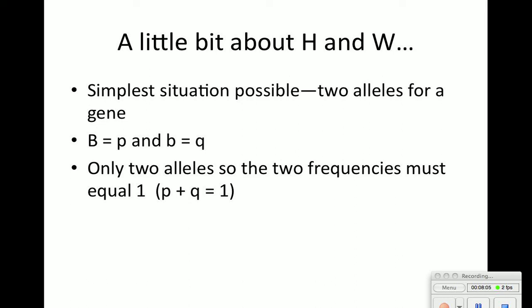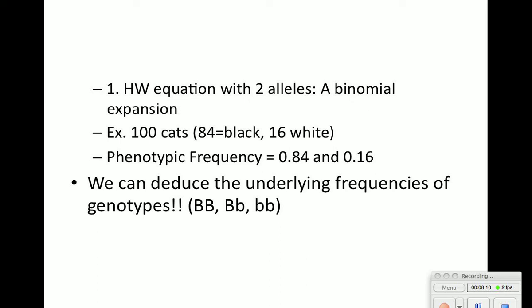So the dominant allele plus the recessive allele must equal 100% or 1 — it could be 60-40 or 55-45. The Hardy-Weinberg equation is a binomial expansion. For example, if I have 100 cats — 84 are black and 16 are white — the phenotypic frequency would be 0.84 and 0.16. We can deduce and figure out all the other allele frequencies from there.